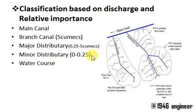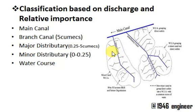Major and minor distributories are the actual canals which carry water to the irrigation fields. Water course canals are simple canals which carry water directly into the field. This is the brief layout of how canal irrigation looks.